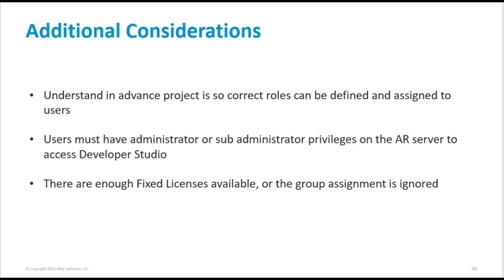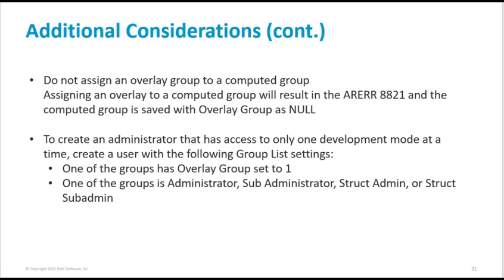Here are some additional considerations to take into account. First, understand the project in advance so the correct roles can be defined and assigned to users. Users must have administrator or sub-administrator privileges on the AR Server to access Developer Studio. Ensure there are enough fixed licenses available, or the group assignment will be ignored. Do not assign an overlay group to a computed group — doing so will result in error 8821 and the computed group is saved with overlay group as null. To create an administrator that accesses only one development mode at a time, create a user where one of the groups has an overlay group setting and another group is administrator, sub-administrator, struct-admin or struct-sub-admin.